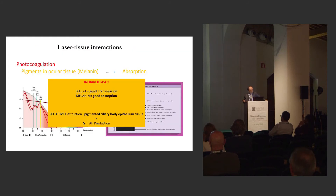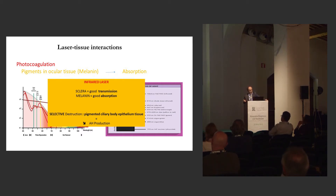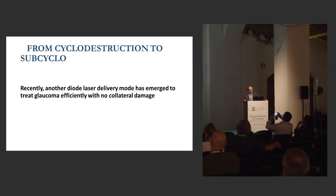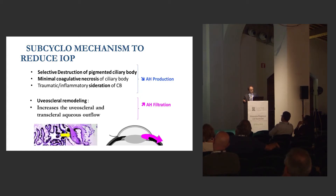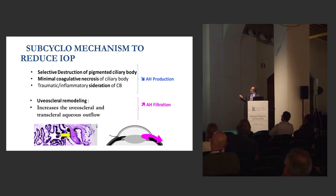This has changed because the laser used now is the diode laser, which most of you are using in this procedure. It decreases ciliary body epithelium tissue and thereby decreases aqueous humor production. Now there is another diode laser delivery mode to avoid collateral damage. It works by selective destruction of pigmented ciliary body, with minimal coagulatory necrosis and very little effect on ciliary body stroma.